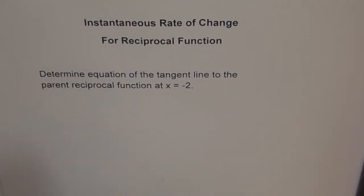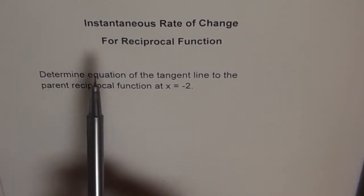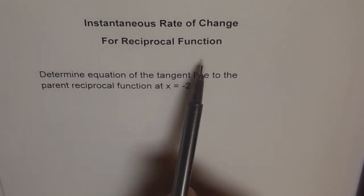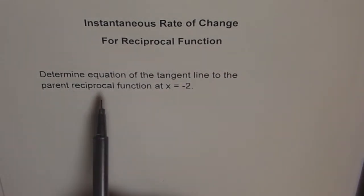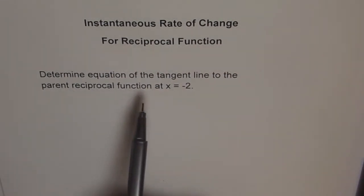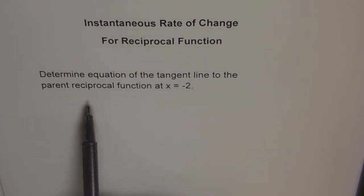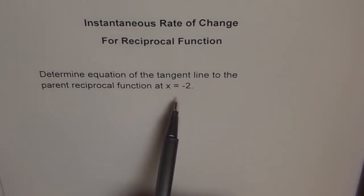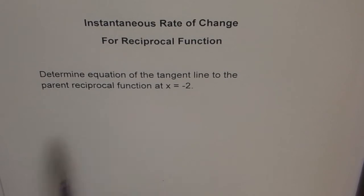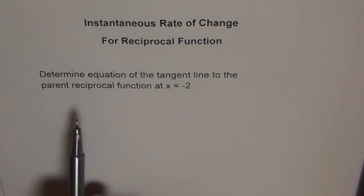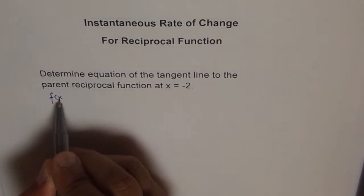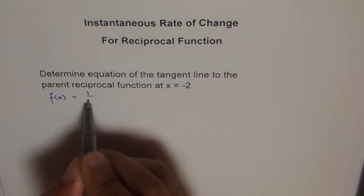This is a very interesting question about instantaneous rate of change for a reciprocal function. Determine the equation of the tangent line to the parent reciprocal function at x equals minus 2. The parent reciprocal function is f of x equals 1 over x.